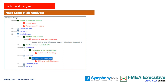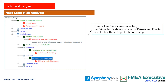As you work with the FMEA executive software, you will discover that severity, occurrence, and detection ratings can be assigned to failures. Detection and occurrence ratings become relevant to failure causes, which are failures associated with work elements. As a result of connecting the failure chain, FMEA executive shows causes and effects connected as a node to each failure mode under focus. Double click this node to go to the next step.